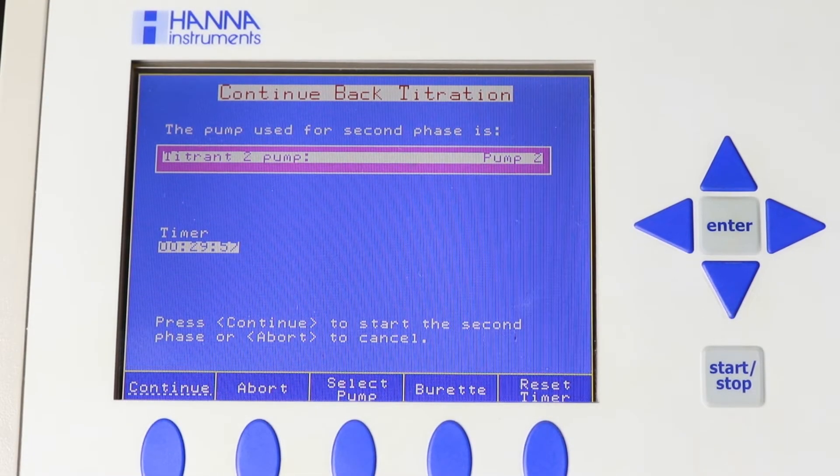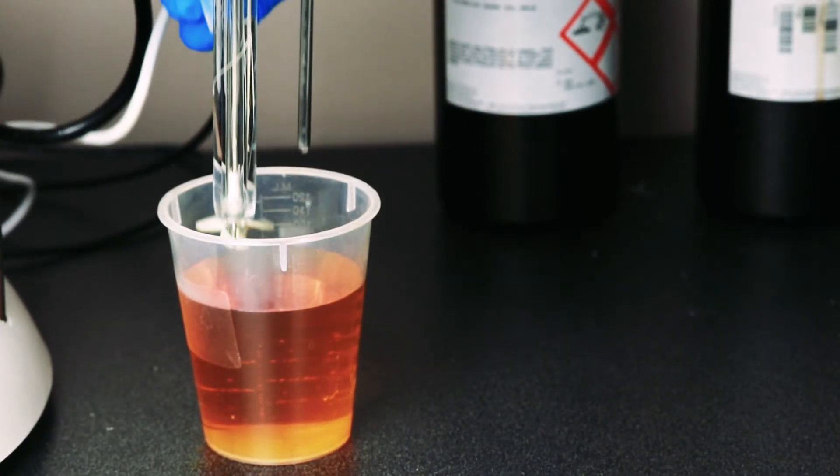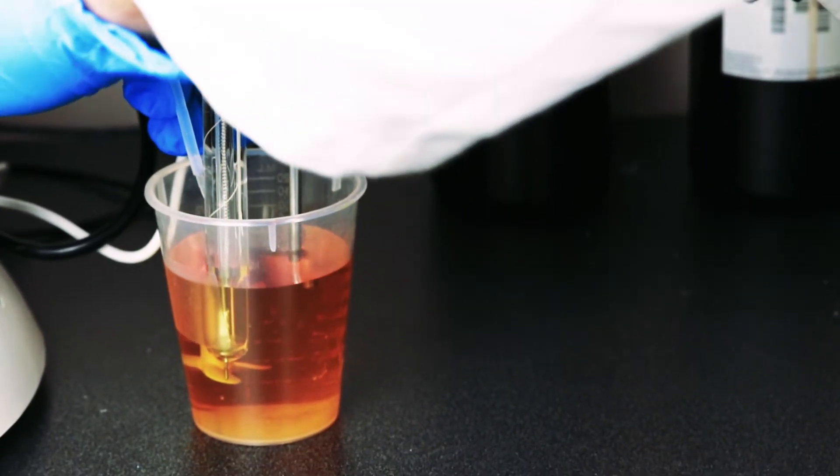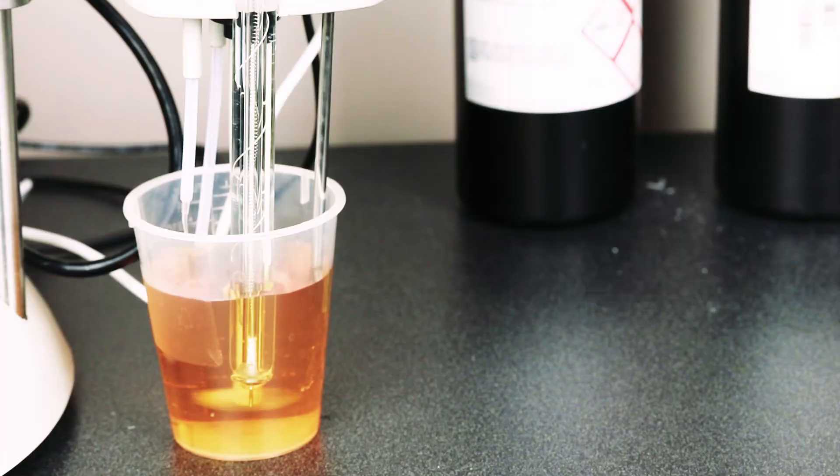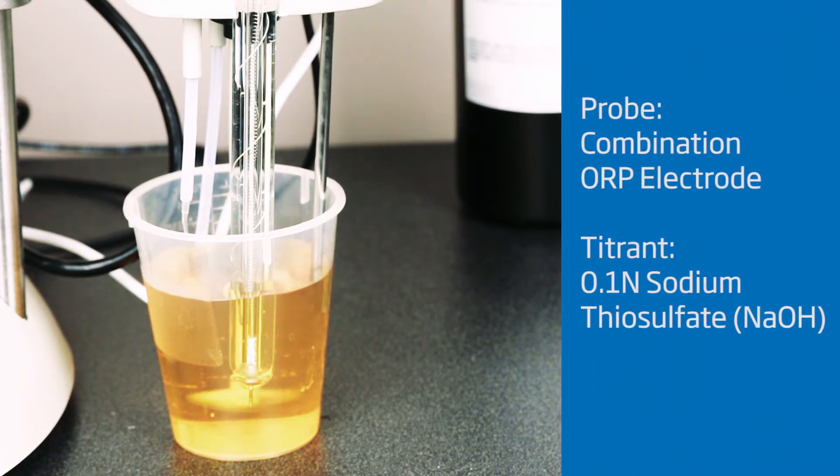After the 30 minutes have elapsed, submerge the stirrer, dosing tip, and electrodes into the beaker and press start. The titrator will then back titrate the excess iodine.